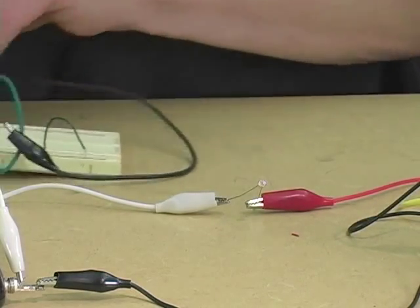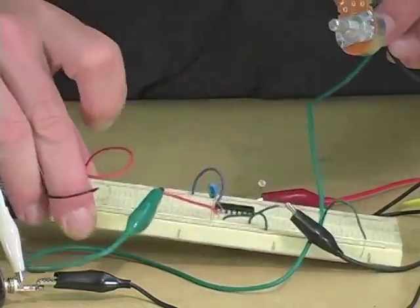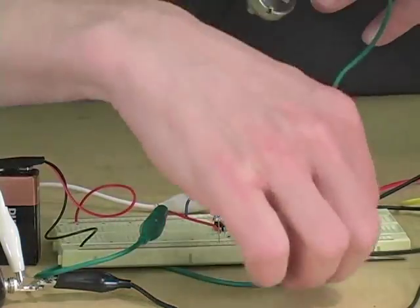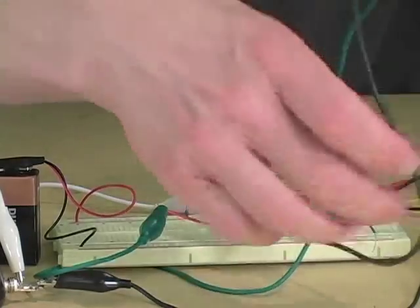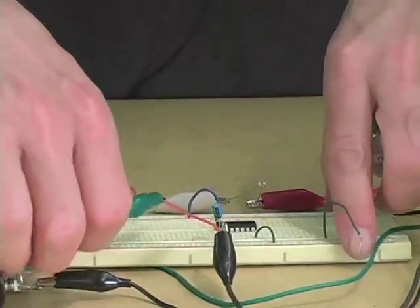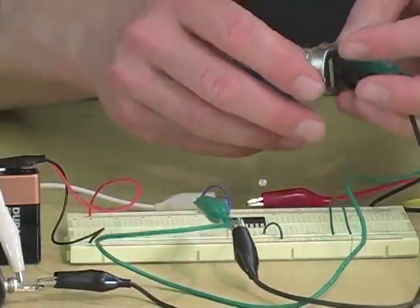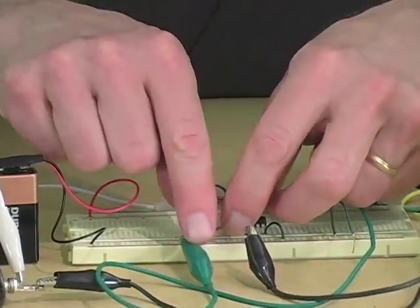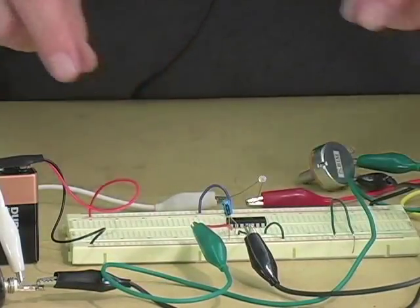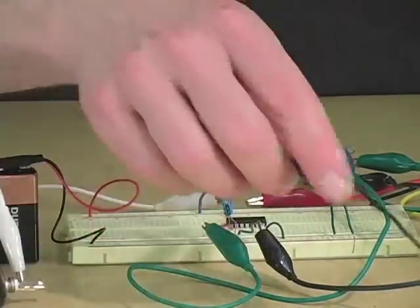On the other hand, if we bring in a small circuit, we can automate that audio switching function. Now, here we have our basic 74C14 oscillator, the one we were making sounds with a little while ago.